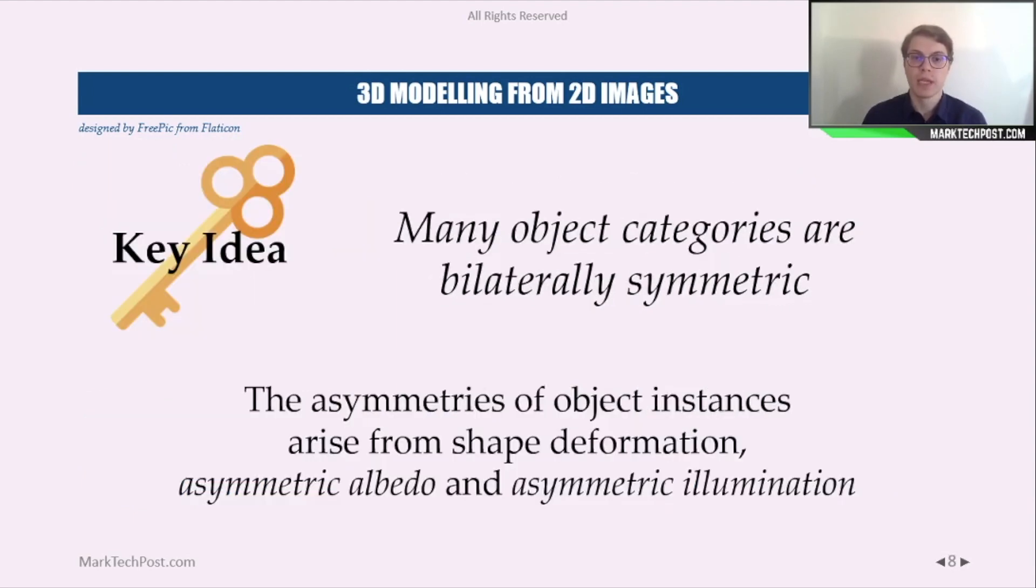But the key idea of this paper is that many object categories are bilaterally symmetric, which means that the asymmetries that we see in the dataset arise from shape deformation, asymmetric albedo, or asymmetric illumination.